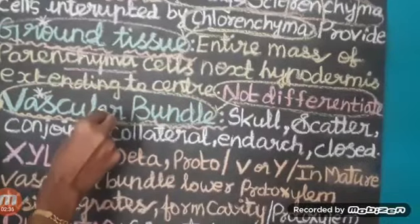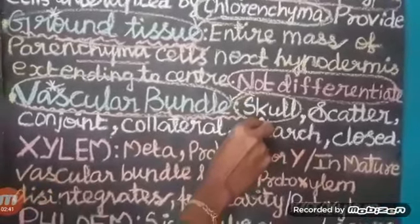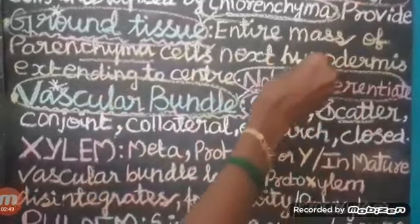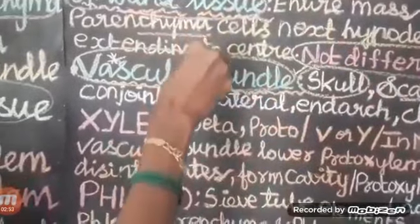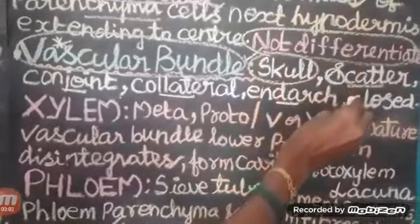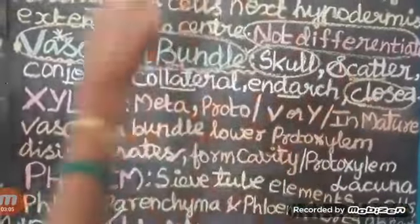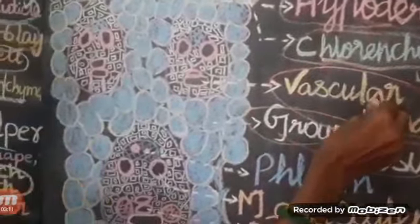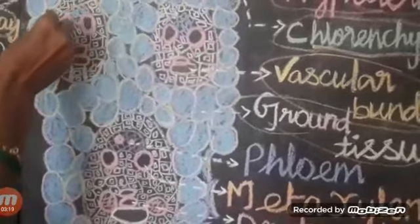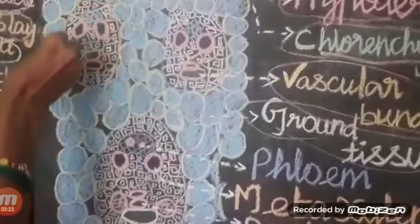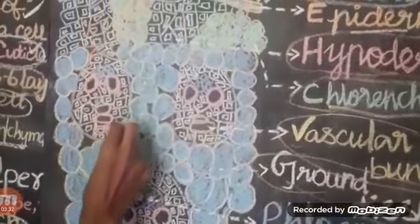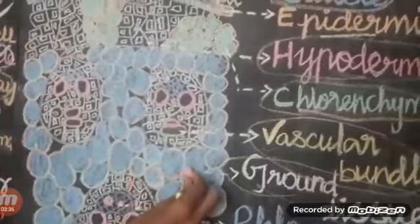There is no endodermis. Vascular bundles are skull-shaped, which means a bone structure of the human head. Vascular bundles are scattered, which means spread over the ground tissue.